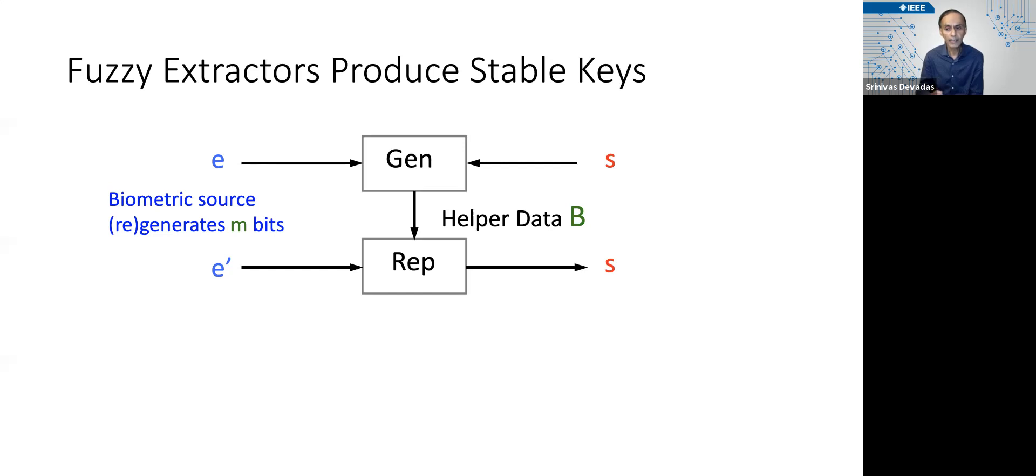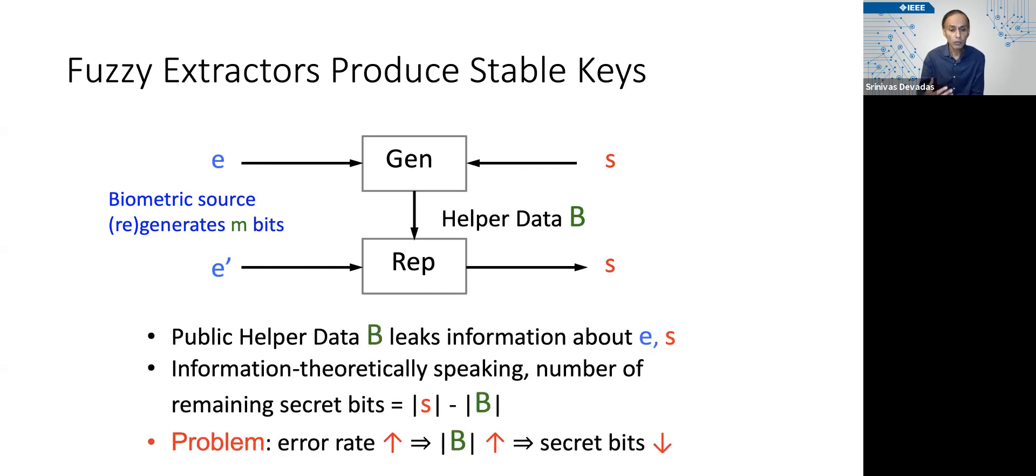So this fuzzy extractor notion was originally proposed in an information theoretic setting, where you recognize that the public data B is going to leak information about e as well as s, and in the information theoretic sense, the number of remaining secret bits is going to be the number of bits in s minus the number of bits you expose in B.